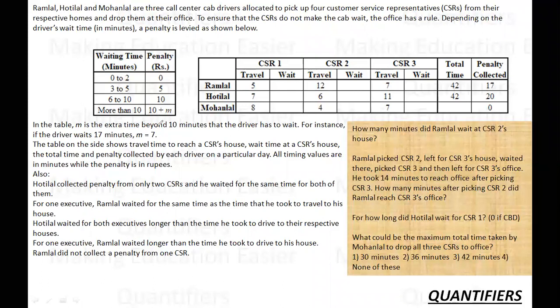In the table, M is the extra time beyond 10 minutes that a driver has to wait. For instance, if a driver has to wait for 17 minutes, M is 7. In that case, the fine will also be 70. The table on the side shows travel time to reach CSRs house, wait time at CSRs, and penalty collected by each driver on a particular day. All timings are in minutes and values in rupees. So then there are some condition events.